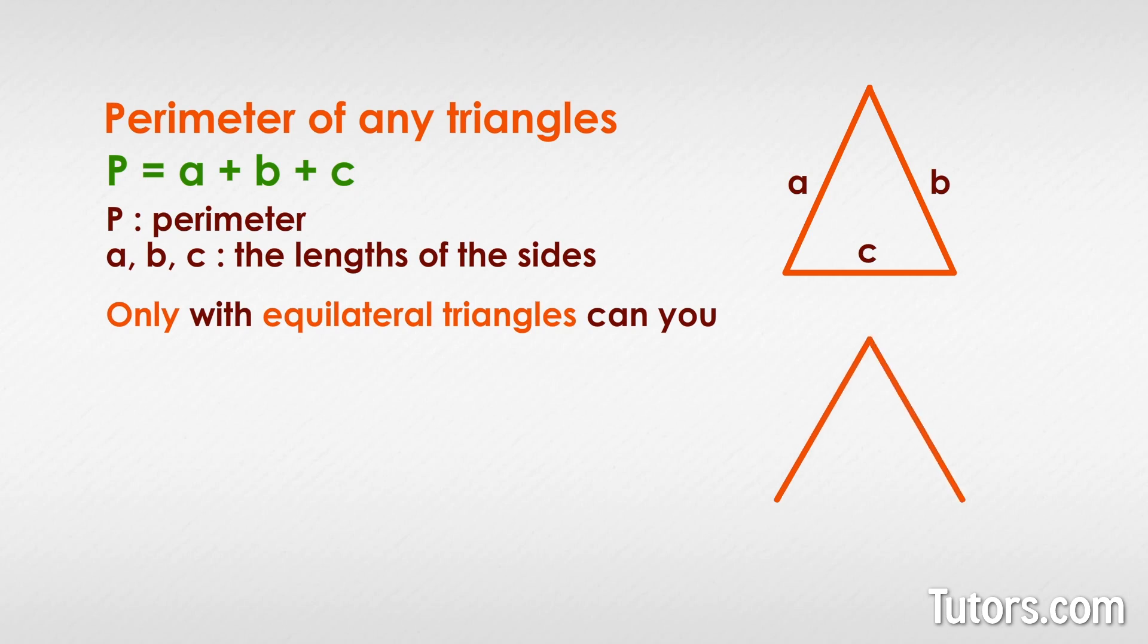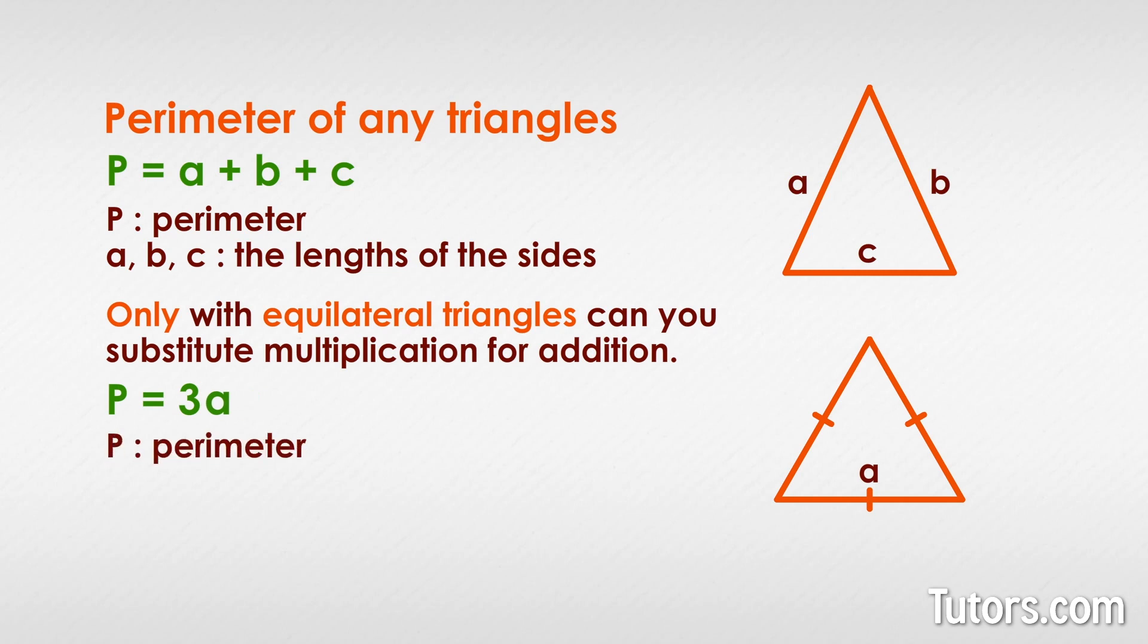Only with equilateral triangles can you substitute multiplication for addition, since equilateral triangles have three equal sides. P equals 3 times A, or P equals 3A, where P is the perimeter and A is the length of any side.